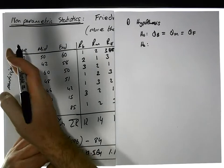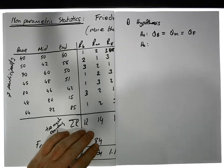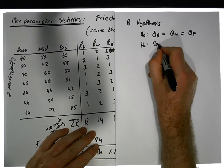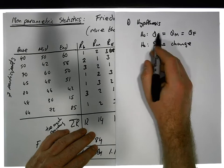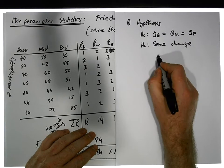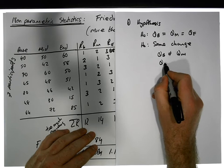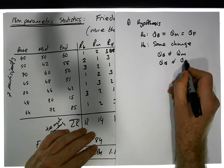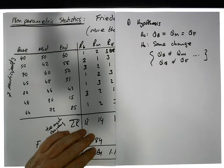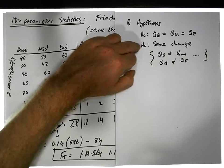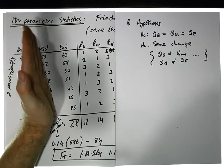In other words, the null hypothesis means the intervention hasn't worked. The alternative hypothesis is that there is some difference — some change across the scores. It could be the case that theta-b is not equal to theta-m, or theta-b is not equal to theta-f, and so on, with lots of different pairwise comparisons. The alternative is that there's some difference between the baseline, the midpoint, and the endpoint measurements.